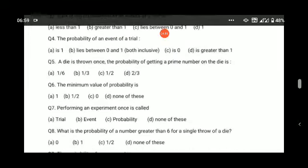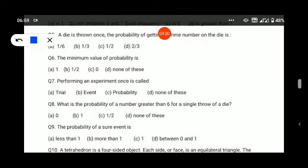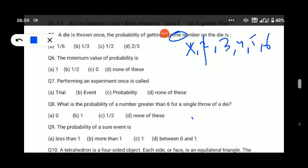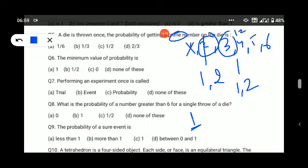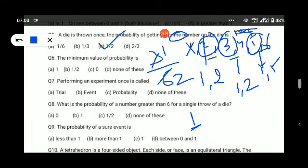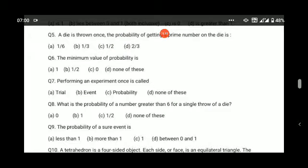Next question: A die is thrown once, find the probability of getting a prime number on the die. If you roll a die, total cases are 6. We need favorable cases that are prime. Primes are numbers with only two factors, appearing in only two tables: their own and one's. One is not prime because it appears in only one table. Two is prime, three is prime, four is not prime because it has multiple factors, five is prime. So we have three prime numbers. Three favorable cases out of six total: three ones are three, three twos are six, so one by two will be the correct answer.